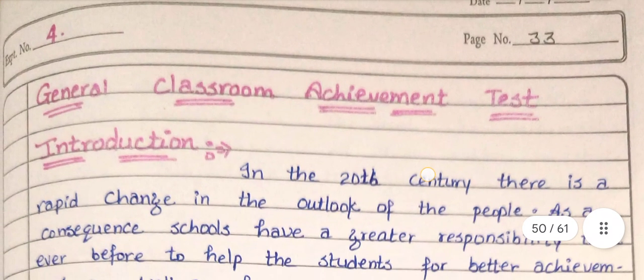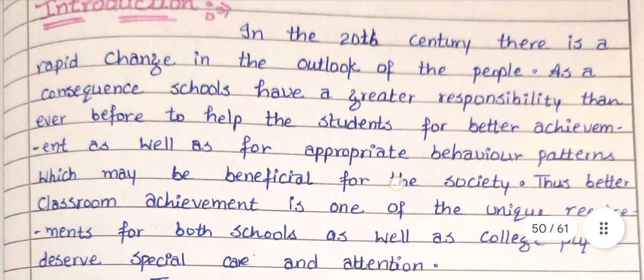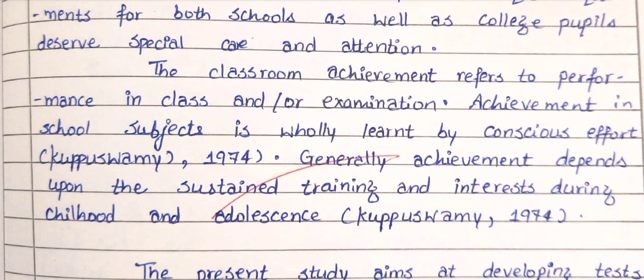First, we will talk about the introduction of the general classroom achievement test. In the 20th century, there is a rapid change in the outlook of the people. As a consequence, schools have a greater responsibility than ever before to help students achieve better results as well as develop appropriate behavior patterns, which may be beneficial for society. Classroom achievement refers to performance in class and or examination.